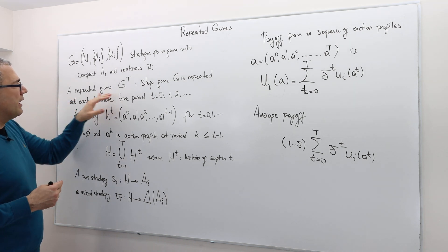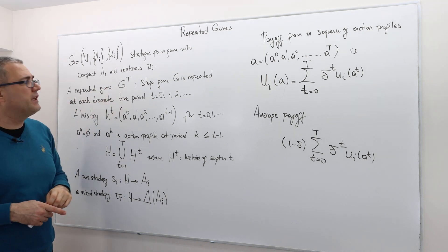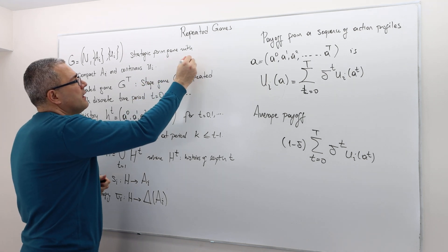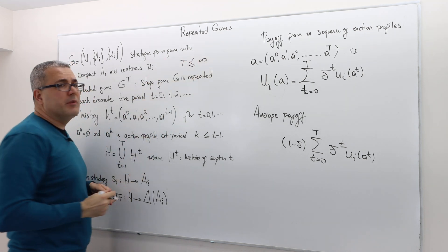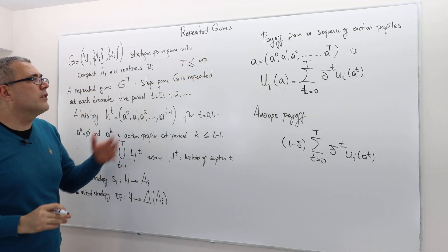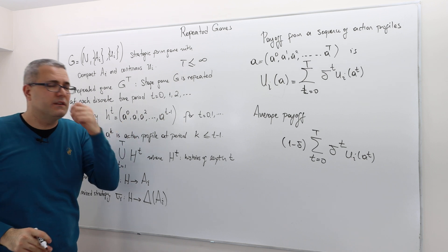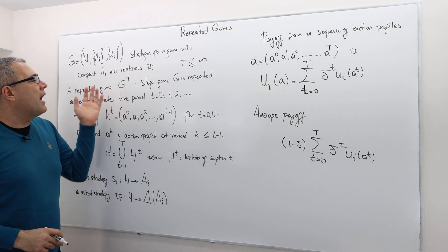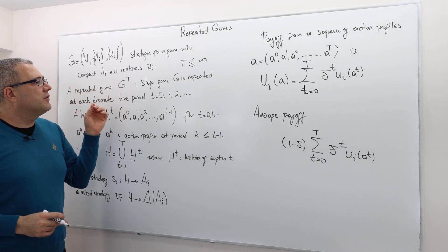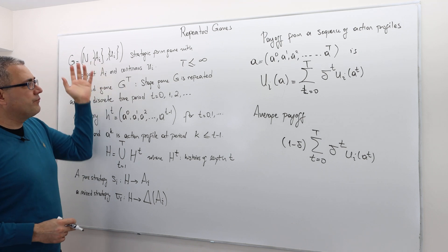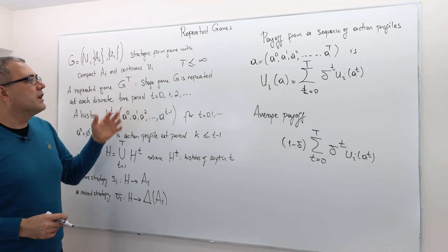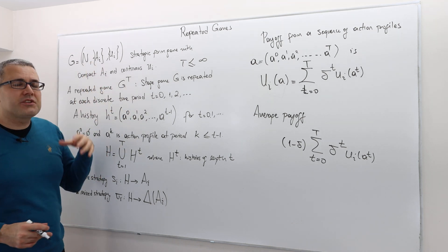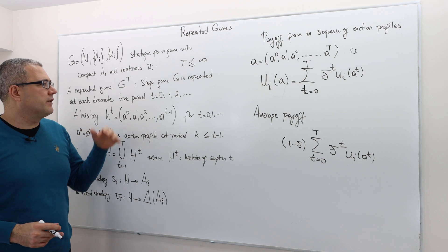A repeated game, denoted by G superscript T — and T can be finite or infinite; remember, infinity is not a number, it's just a concept — is basically the following: the stage game G is going to be repeated at each discrete time period.